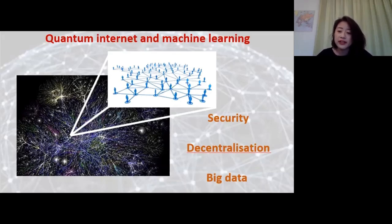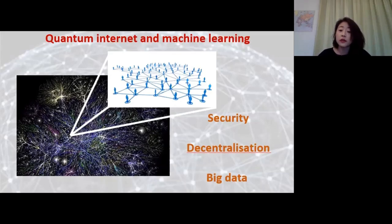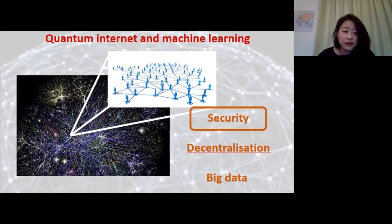Thirdly, the motivation for network settings in distributed computing is really dealing with big data—why we want network settings when a centralized computer cannot handle so much data. Some of the key motivations for machine learning using quantum algorithms has been to deal with a lot of this big data. For this morning, we'll focus on the security aspect of these questions.